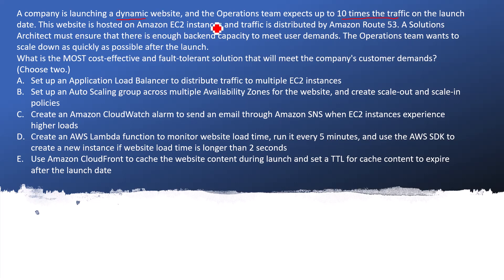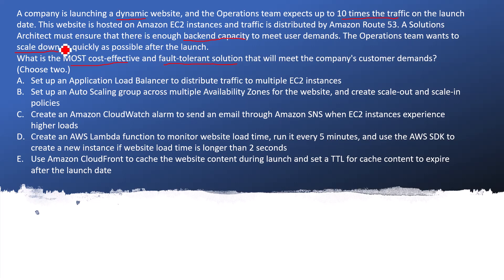A solutions architect must ensure there is enough backend capacity to meet user demands. Basically, when we talk about backend capacity, it means enough EC2 instances must be available. The main problem is that if you are not scaling down your EC2 instances, the charges will be higher and it will not be the most cost-effective way. The scale down must happen as quickly as possible so you are not paying for unused EC2 instances. We need to choose two options.